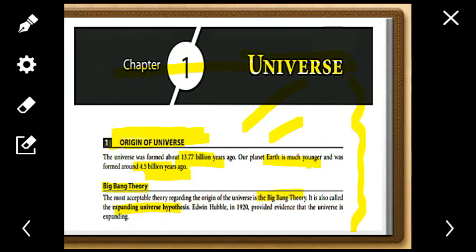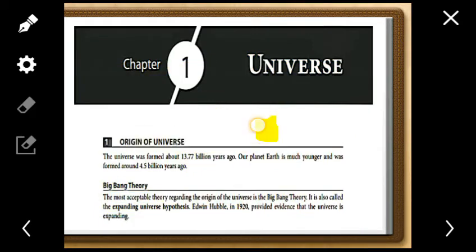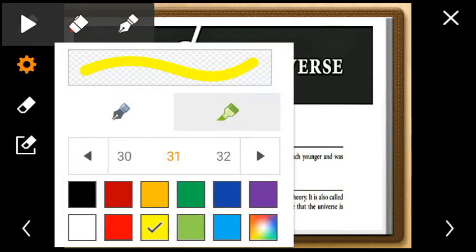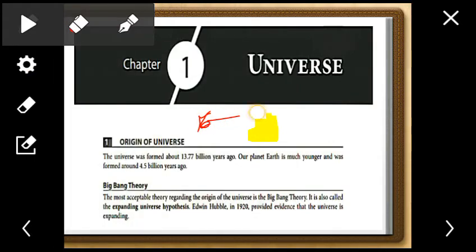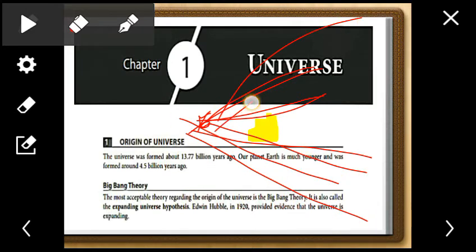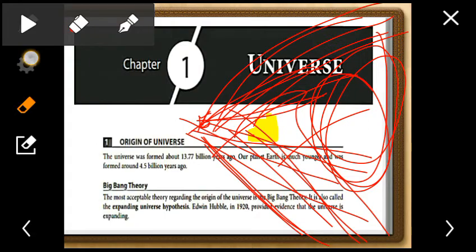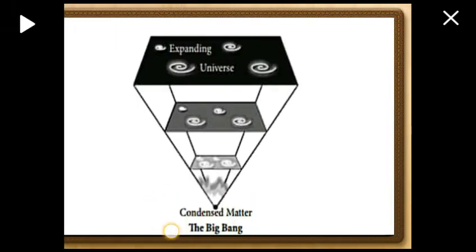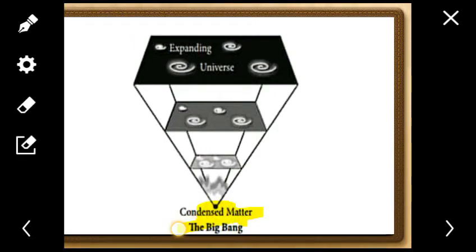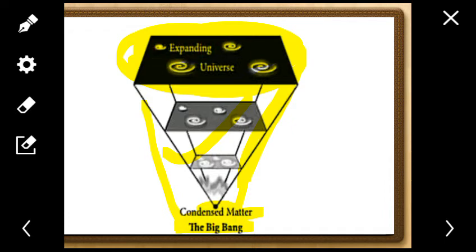The most acceptable theory regarding the universe's formation is the Big Bang Theory, also called the expanding universe hypothesis, given by Edwin Hubble in 1920. It states the universe originated from a pinpoint and expanded in all directions. The matter started expanding and expanding, and the universe we see today is that expanded form.